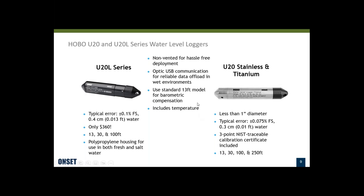We recommend using the 13-foot model of either series for doing barometric compensation. These loggers also record temperature. The U20L series typically has accuracy around 0.1% of full scale. They start at $360 US dollars with three different ranges, and the polypropylene housing is suitable for fresh or salt water. The metal housing U20 series loggers have a smaller diameter — less than an inch — slightly better accuracy, include a three-point NIST traceable calibration certificate, and have four different ranges including a deeper range for higher pressure situations.